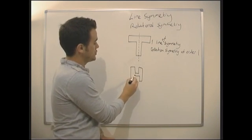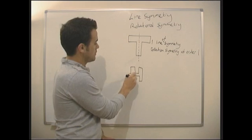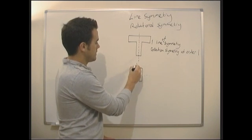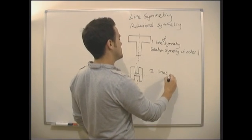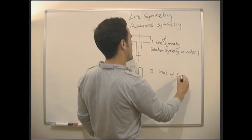Well, the letter H has two lines of symmetry. It's got one going through there, and it's got one going through there. So we've got two lines of symmetry.